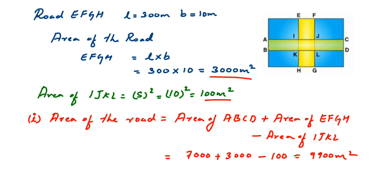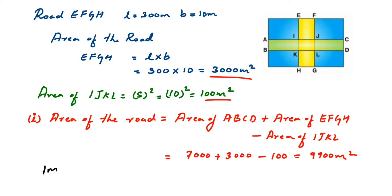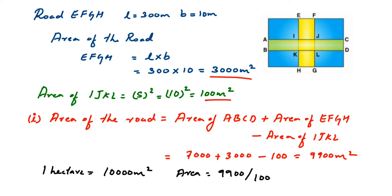Since the answer is required in hectares, and 1 hectare = 10,000 meter square, we divide by 10,000. Area of road = 9900 ÷ 10,000 = 0.99 hectares. That is the answer for the first question.